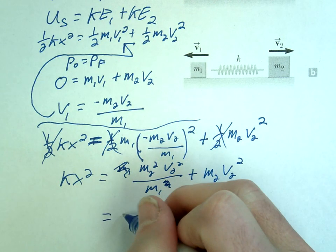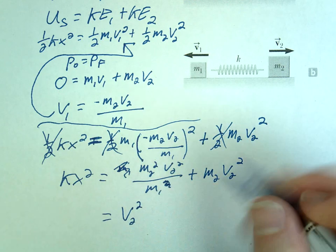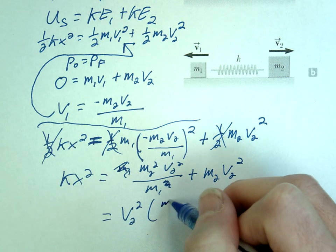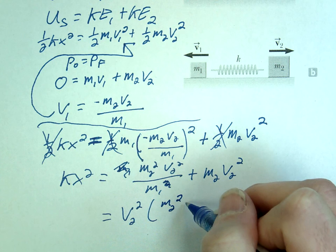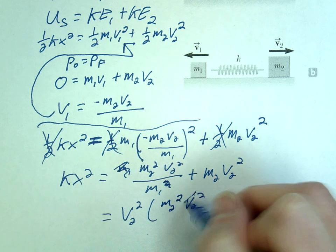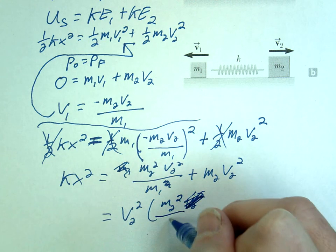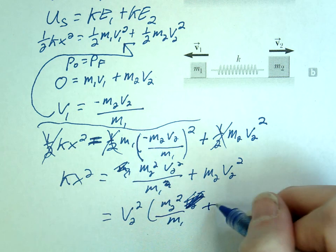Isolate our V2, V2 squared, M2 squared, V2 squared, no, no, no, that's gone. M1 plus M2.